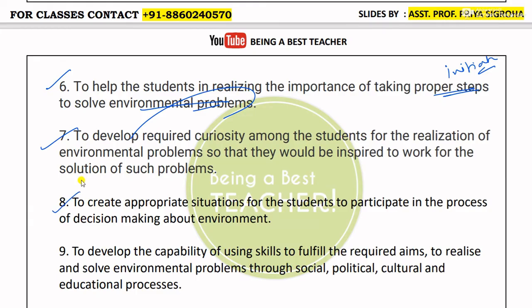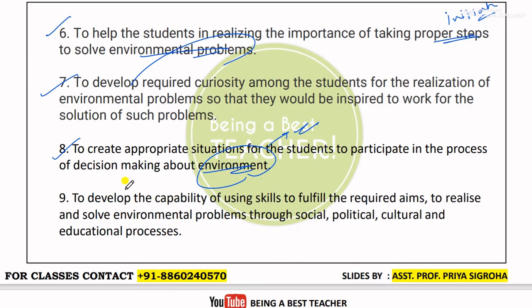Next is to create appropriate situations for students to participate in the process of decision making for the environment — what decisions should be taken to protect it. Children should have an active role in this process.